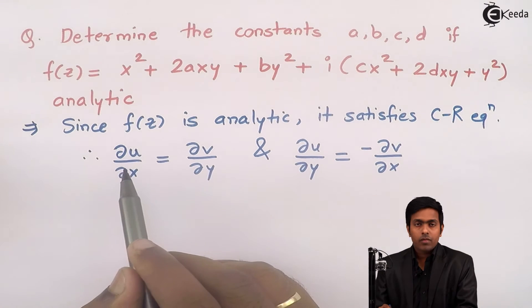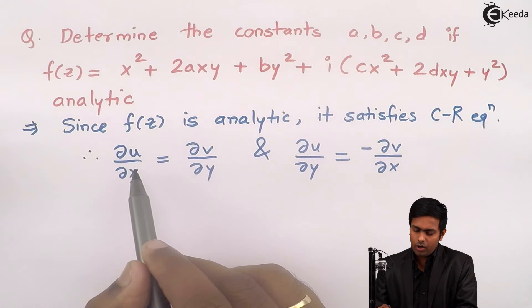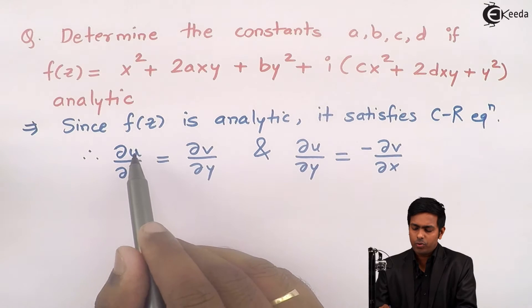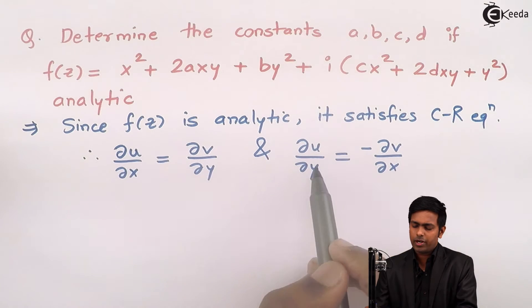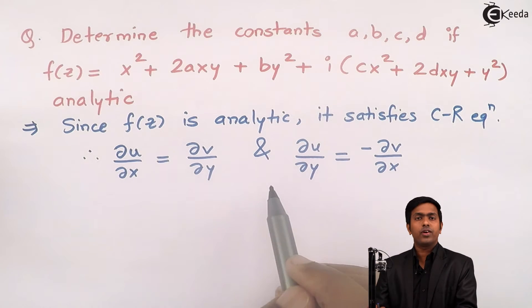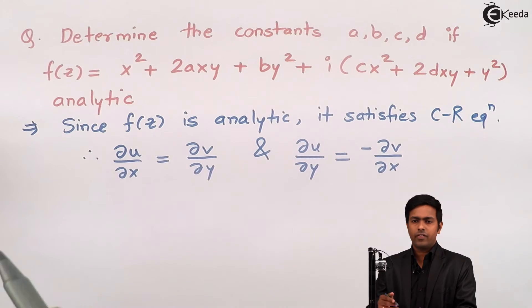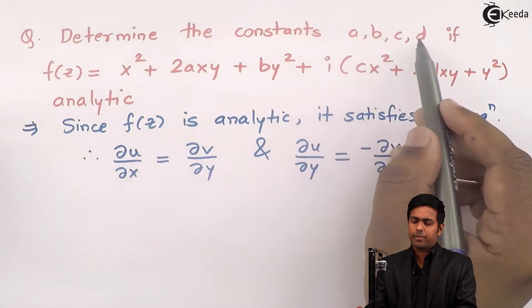Now let us find out the values of ∂u/∂x, ∂u/∂y, ∂v/∂x and ∂v/∂y. We will substitute these into the CR equations and get the values of a, b, c and d.